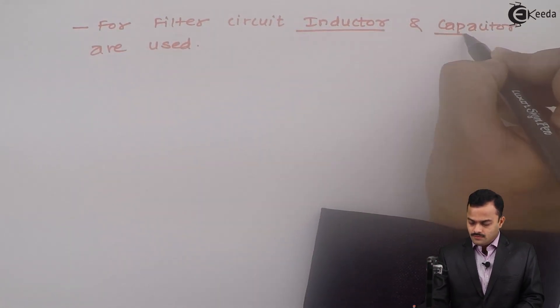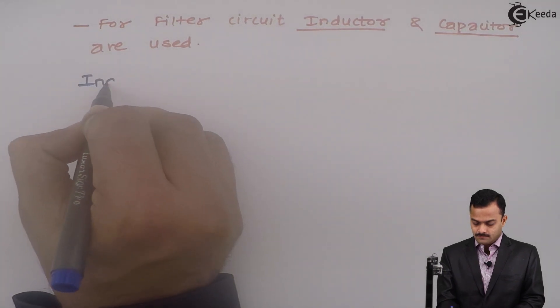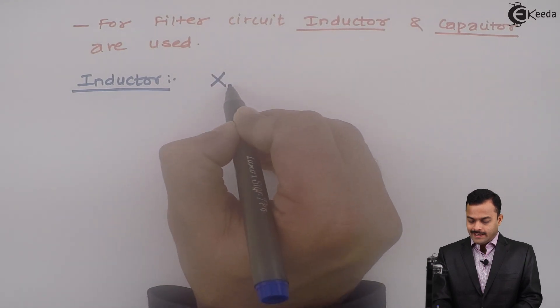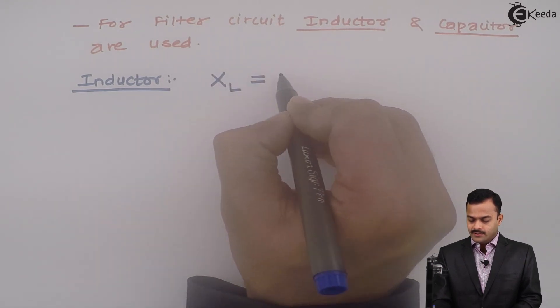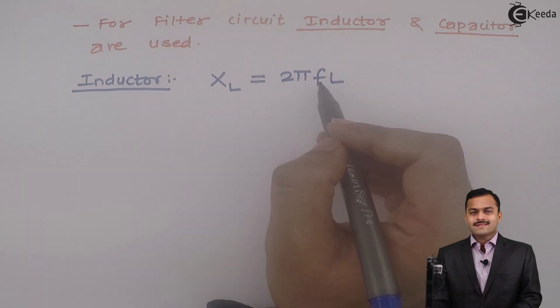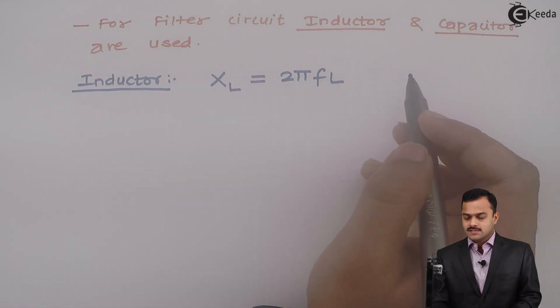Why so? The answer lies in basic principles. For inductor, if I write the reactance, reactance is nothing but resistance offered by inductor to the flow of current. For inductor, it is called as inductive reactance and given as 2πFL. So if suppose frequency is 0 and that is the case for a DC supply, XL will become equal to 0.